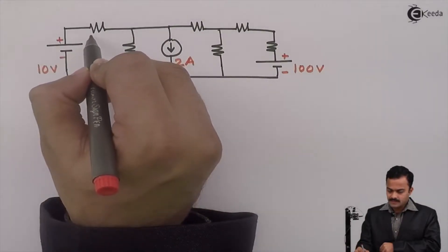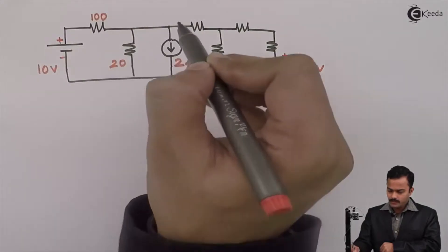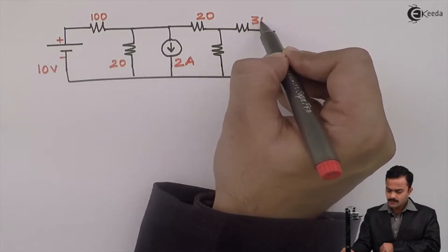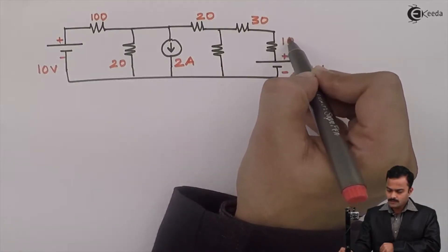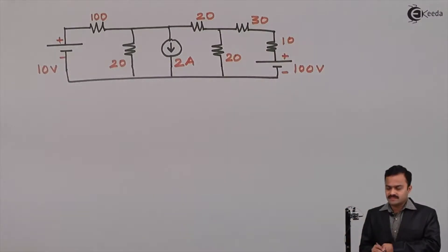Resistances are 100 ohm, 20 ohm, this is also 20, 30 ohm, 10 ohm and one more 20 ohm resistance is given.